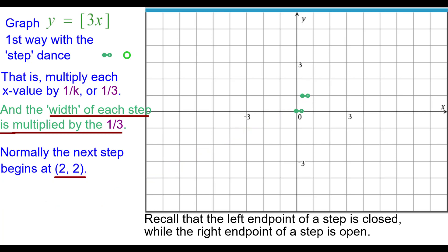The next step normally is at 2 comma 2, but ours is going to be right 2 thirds up 2, because 2 times 1 third will be 2 thirds. The y coordinate unchanged still. Next step at 3 comma 3, but ours will be at 3 thirds or 1 up 3.